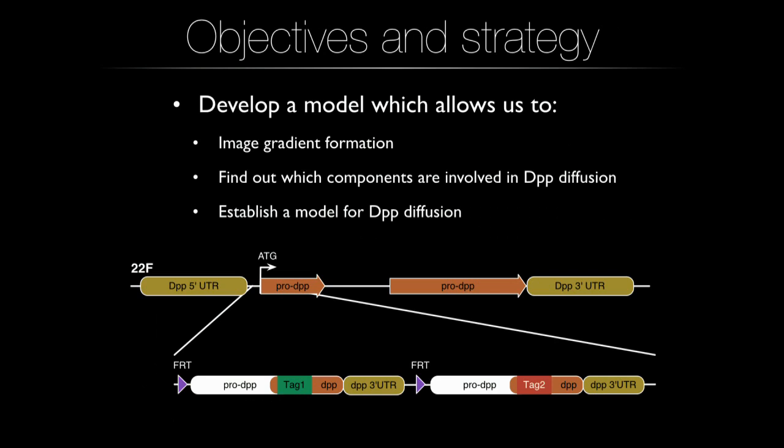We wanted to develop a system to image gradient formation and find which components are involved, using endogenously produced DPP. By CRISPR-Cas9, we produced a knockout of endogenous DPP and replaced it with a tandem of two copies of DPP with different tags for imaging. The key of this transgene is that the first copy, surrounded by FRT sites, allows us to delete it at any time point and see how the protein disappears after Flp recombinase cleaves it out. The second copy is only produced once the first one is deleted, so we can observe how the gradient forms.